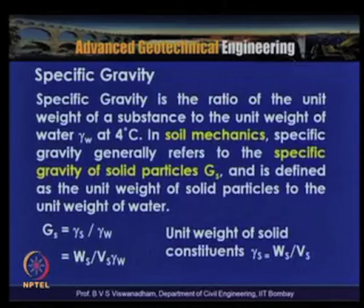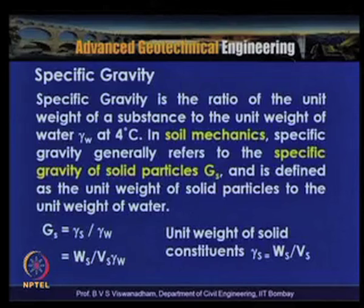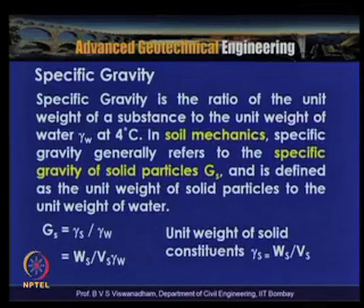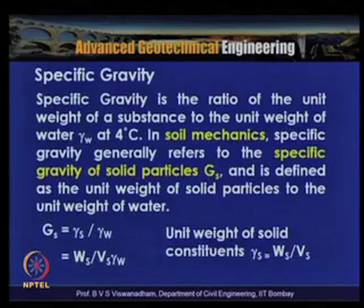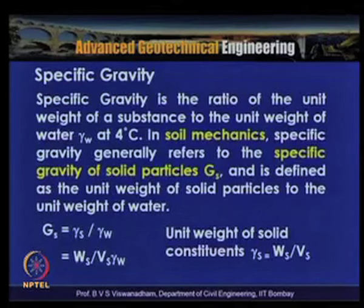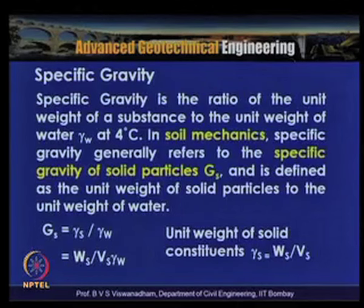Specific gravity is the ratio of the unit weight of a substance to the unit weight of water at 4°C. In soil mechanics, it refers to the specific gravity of solid particles: Gs = γs / γw = Ws / (Vs × γw). Rearranging: weight of solids Ws = Gs × Vs × γw — so knowing specific gravity, volume of solids, and unit weight of water allows calculation of weight of solids.